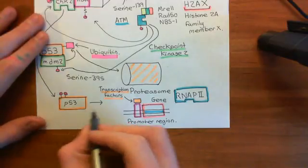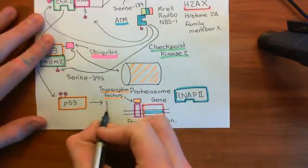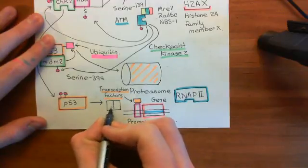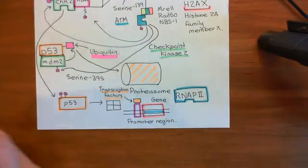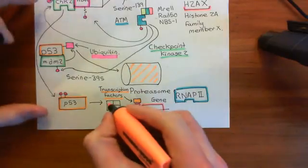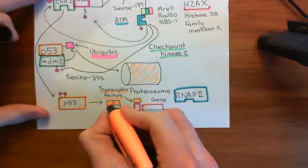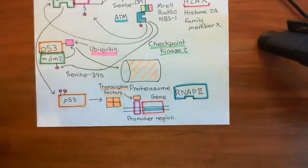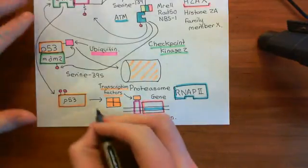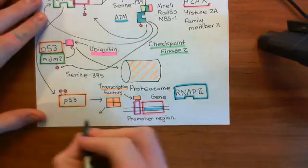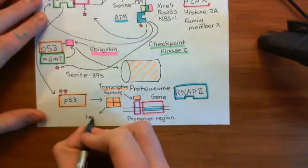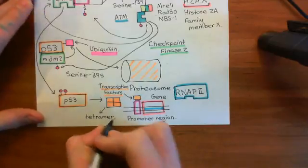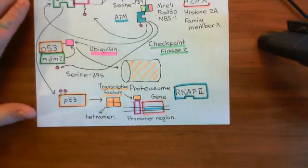The overall message is that transcription factors change the expression level of genes — increasing the expression of some genes and decreasing the expression of others. P53 is a transcription factor. To actually act as a transcription factor, P53 has to tetramerize: four P53 molecules bind together, and this P53 tetramer then binds to promoter regions and changes the affinity of that promoter for RNA polymerase 2, thereby changing the level of expression of the downstream gene.